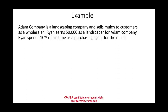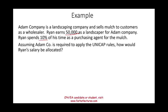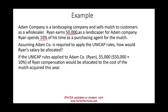Let's look at an example. Atom Company is a landscaping company that also sells mulch to customers as a wholesaler. Ryan, a landscaper, earns $50,000 working for Atom Company; however, Ryan spends 10% of his time as a purchasing agent for mulch — contacting suppliers, verifying billing, etc. Assume Atom is required to apply the UNICAP rule. How is Ryan's salary allocated? If it's a small company, we treat the full salary as a period cost. Under UNICAP, we take 10% of Ryan's $50,000 salary — $5,000 — and add it to the inventory cost of the mulch.